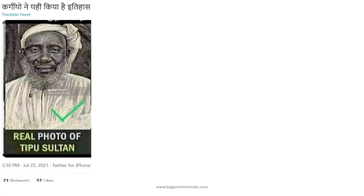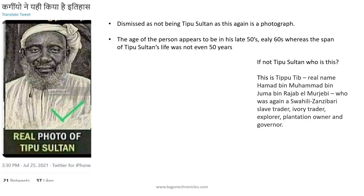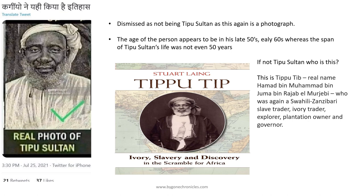Also, from the image, apart from being a photo, this gentleman appears to be in his late 50s or 60s, and we know that Tipu Sultan lived between 1751 to 1799, so he did not even reach 50 years. This image is in fact of Tipu Tip, his real name being Hamad bin Mohammed, who was again a Swahili, Zanzibari slave and ivory trader. There is also a book on him. It is also interesting to know that both Tipu Tip and Rumeliza are contemporaries and knew each other. In fact, it is said that Tipu Tip helped Rumeliza become the Sultan of Ujiji.